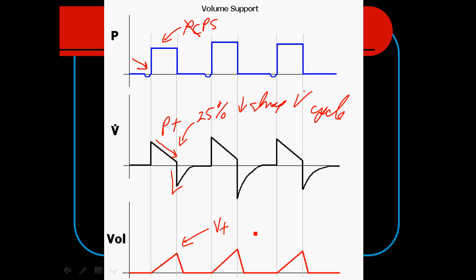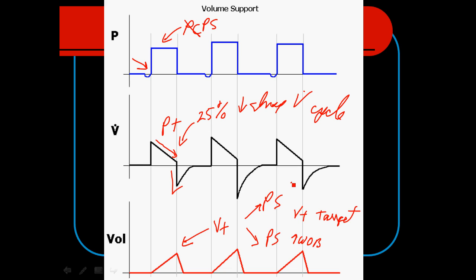The difference from pressure support comes in because the ventilator is tracking the volume target. If the patient is making very little inspiratory effort and requires additional pressure support, the ventilator will increase the pressure support; it will decrease the pressure support level if the patient is meeting the tidal volume target. What's unusual is that when the patient is doing a high work of breathing and taking a big breath in, the pressure support level is actually turned down; when they're just barely triggering the ventilator, the pressure support level increases. That's why we consider it a self-weaning mode.